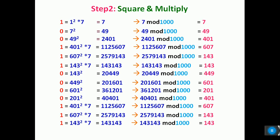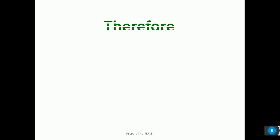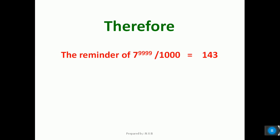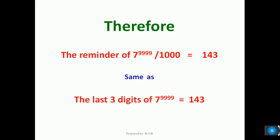Next bit is 1, so we will again get the remainder as 143. That is the last bit. Therefore, we have the final answer: the remainder of 7 to the power 9,999 divided by 1,000 is equal to 143, which is the same as the last three digits of 7 to the power 9,999, that is equal to 143. Thank you.